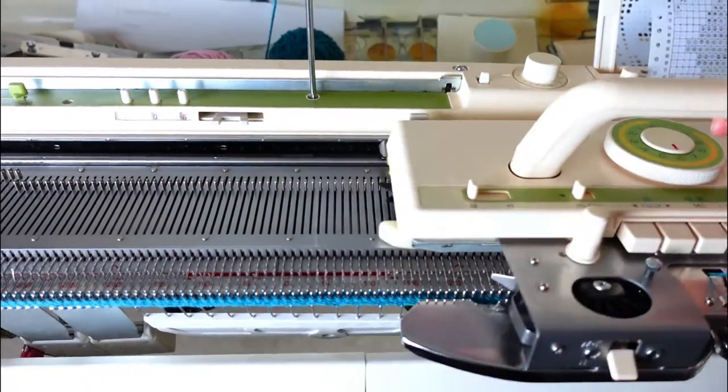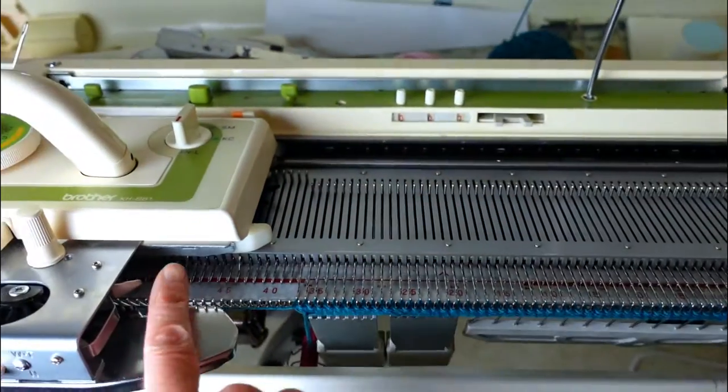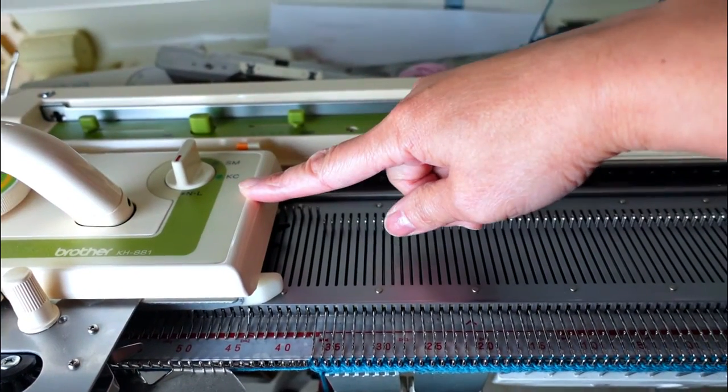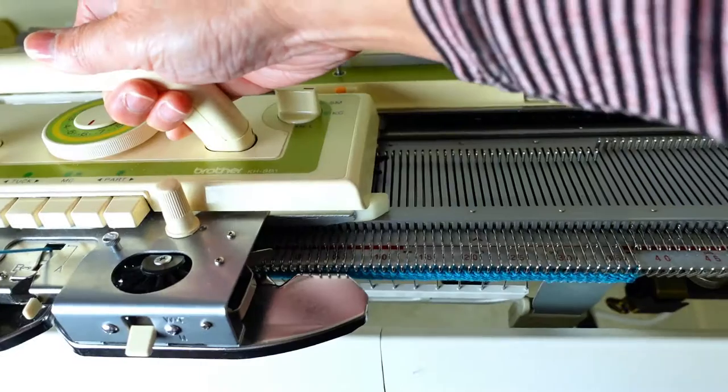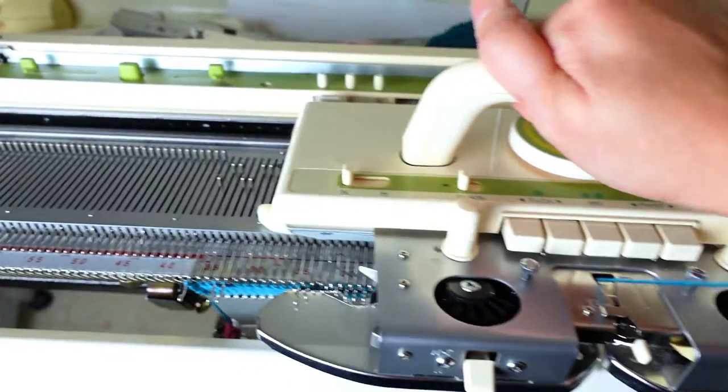When we are ready to knit the pattern, we park the carriage on the left side. The carriage should be set to KC. And we knit one row first. You will see the stitches are selected.